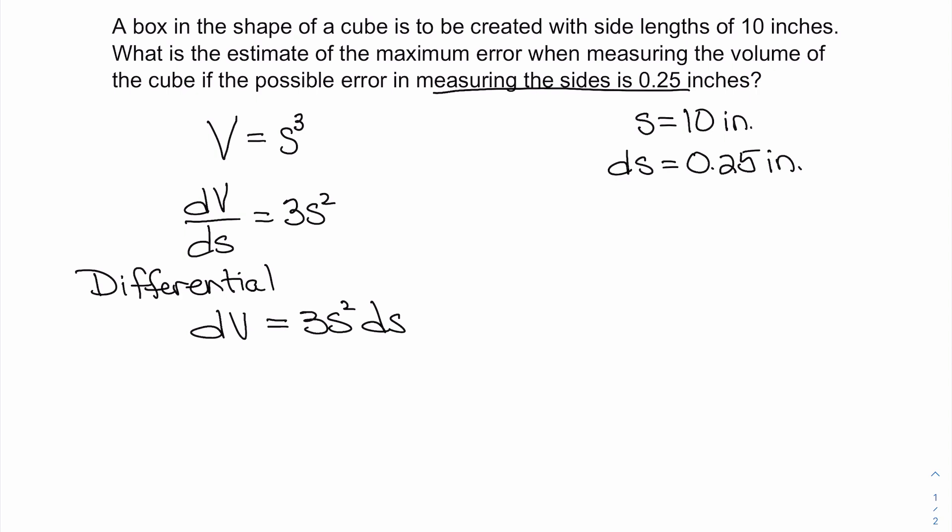So now we can go ahead and plug that information in. We're going to plug the 10 inches in for the s and we are going to plug the 0.25 inches in for the ds. So we have dV is equal to 3 times 10 inches squared times 0.25 inches.